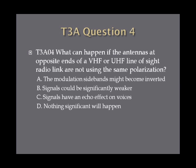Question 4: What can happen if the antennas at opposite ends of a VHF or UHF line-of-sight radio link are not using the same polarization? A. The modulation sidebands might become inverted. B. Signals could be significantly weaker. C. Signals have an echo effect on voices. Or D. Nothing significant will happen.